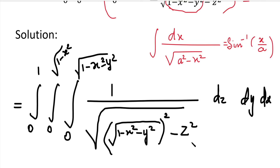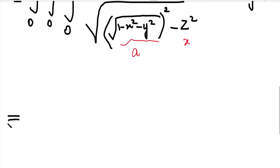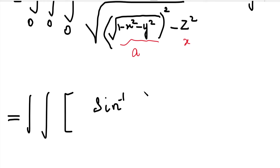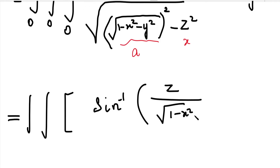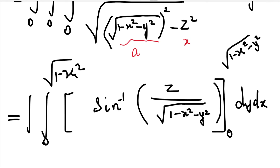If we integrate the inner integration, this is of the form integral of 1 by root of (a square minus x square). Here a equals root of (1 minus x square minus y square). Applying the formula sin inverse (x by a), with limit 0 to root of (1 minus x square minus y square), we get a double integral with dy dx remaining.